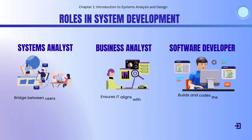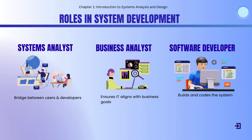In building an information system, different roles are very essential. The systems analyst acts as a bridge between the users and developers, ensuring the requirements are very clear. The business analyst focuses on aligning information technology with organizational goals. And the software developer or programmer is responsible for actually coding and building the system. These roles are very important because they must work together for a successful project.